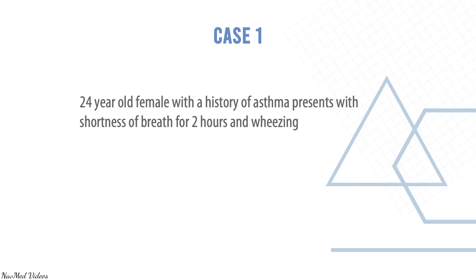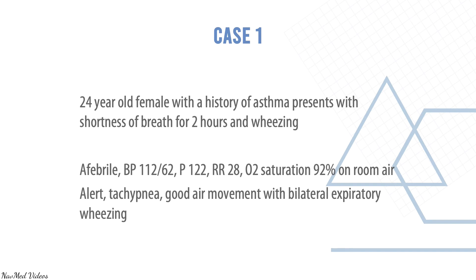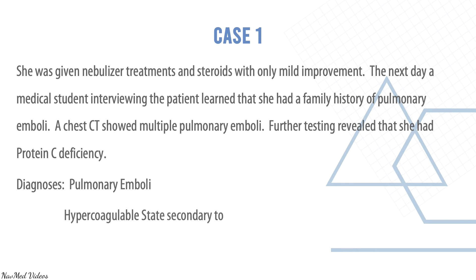Returning to case one: the 24-year-old asthmatic female was given nebulizer treatments and steroids with only mild improvement. The next day, a medical student learned she had a family history of pulmonary emboli. CT scan showed multiple pulmonary emboli, and testing revealed protein C deficiency. The diagnosis was pulmonary embolism secondary to a hypercoagulable state from protein C deficiency.